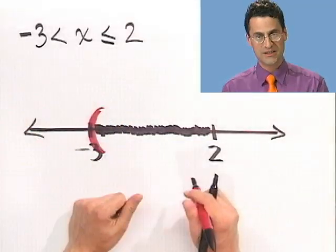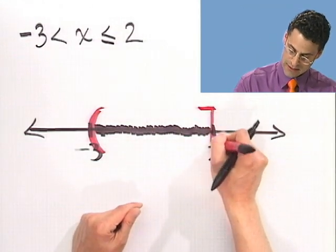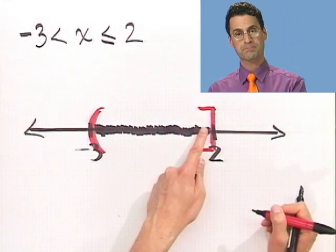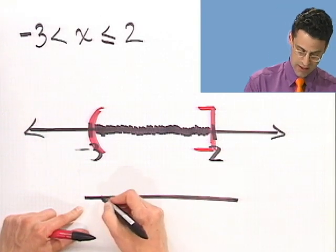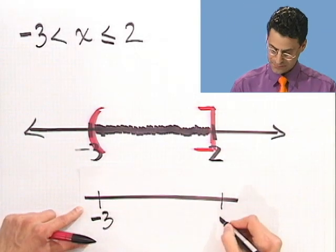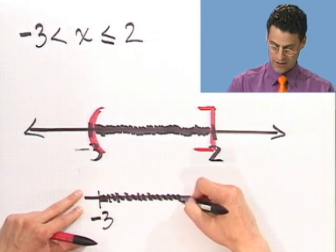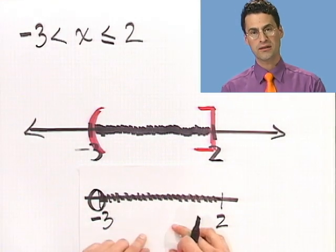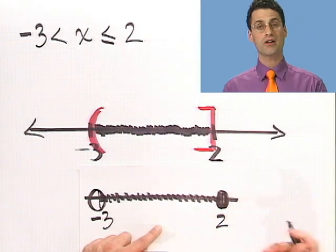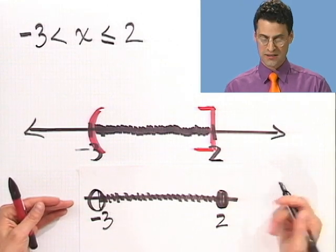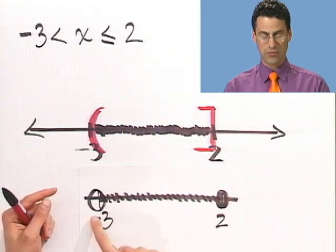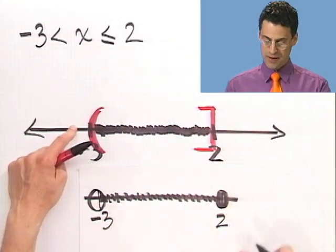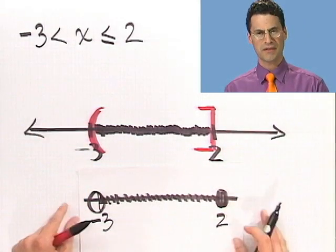However, 2, feel free to dip into 2 as much as you'd like. So, to denote that, what I'm going to do is put a bracket to indicate that, in fact, that value is allowed. Now, some people actually like to use little circles. You use a circle, and you put an open circle if you don't want to include the point, and you put in a filled-in circle, like this, if you want to include the point. So, these two things are actually saying the exact same thing. These are all the points that are in between minus three and two, excluding minus three, but including two.